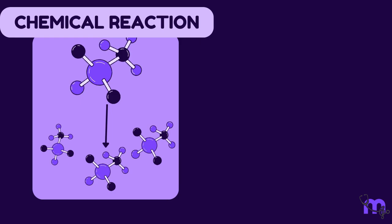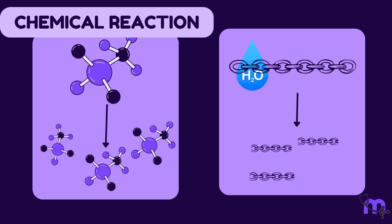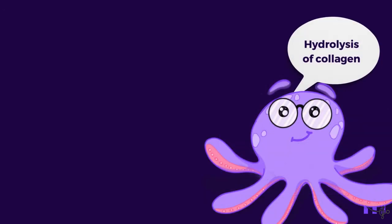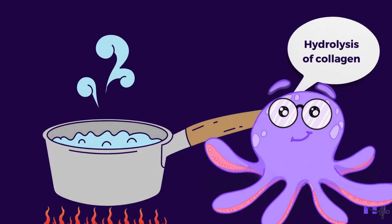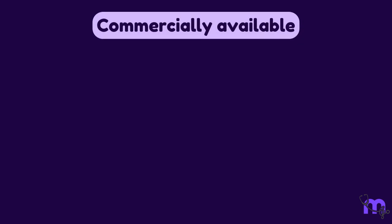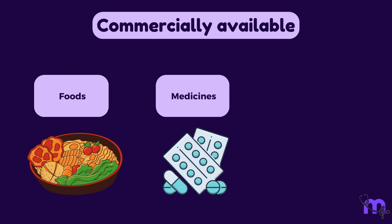In the case of collagen, hydrolysis breaks down the long protein chains into smaller, more manageable pieces. The hydrolysis of collagen into gelatin can occur naturally when cooking certain foods such as meat or bones in water. Gelatin can also be commercially produced for various uses in foods, pharmaceuticals, and cosmetics.